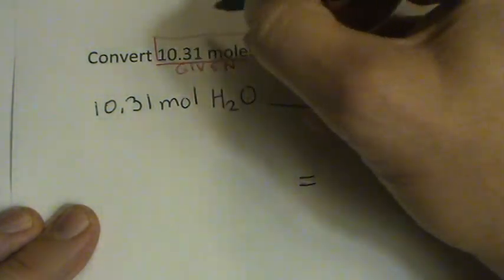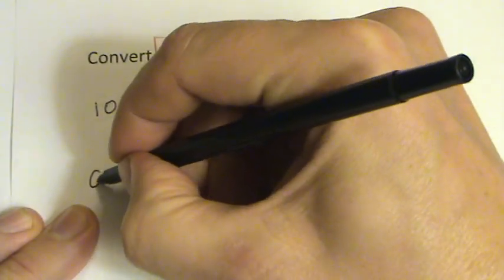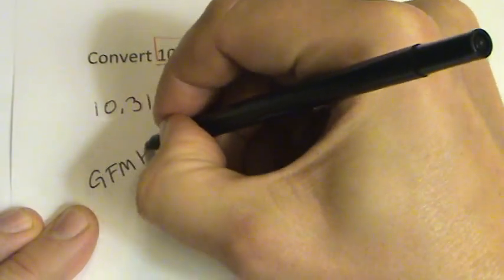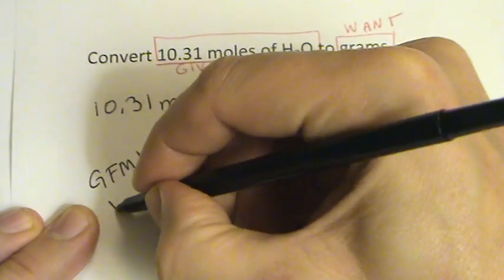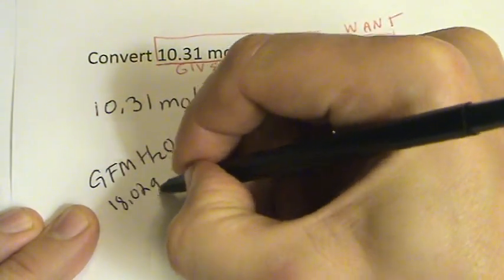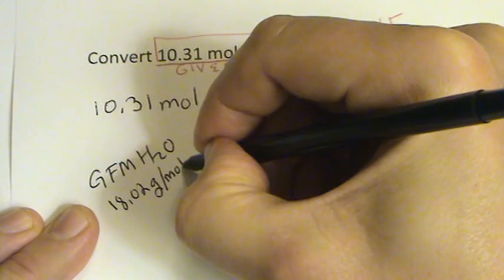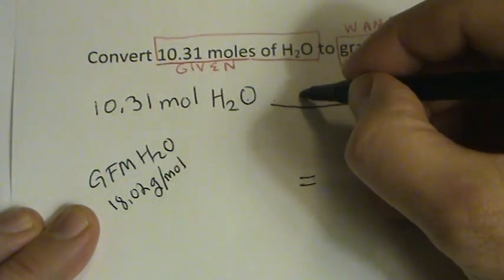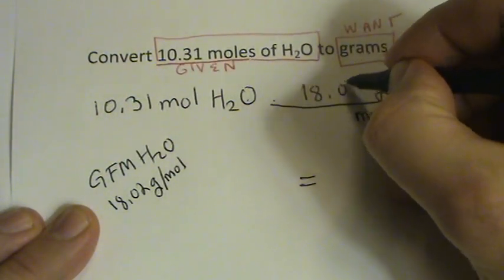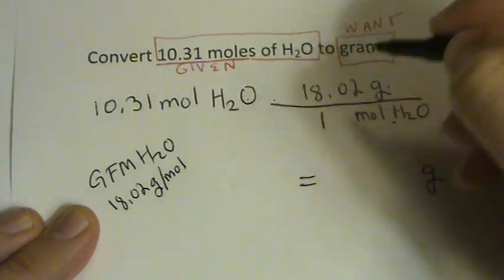So grams per mole is just the GFM. In the last problem, we calculated the GFM of H2O using our periodic table to be 18.02 grams per mole. So we have 18.02 grams in one mole.